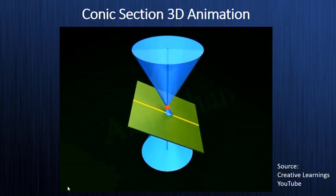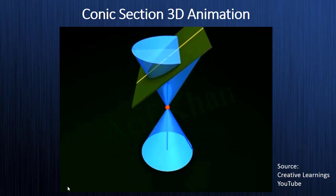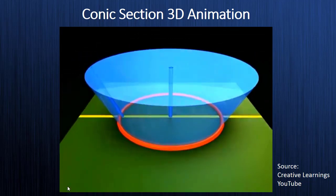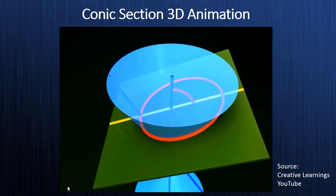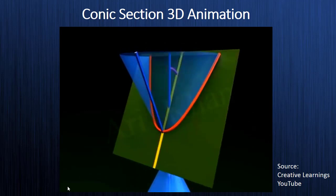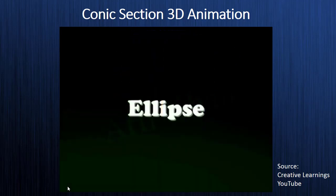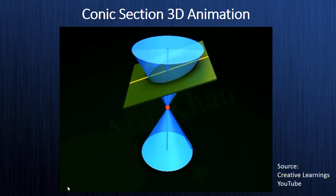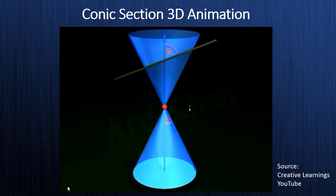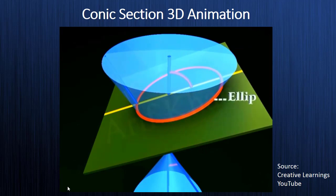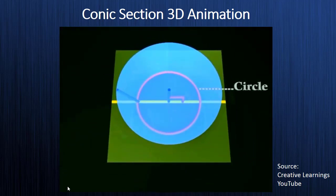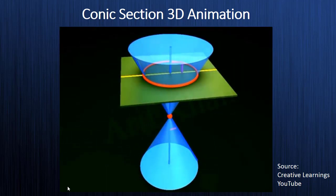If a plane intersects a double right circular cone, we get two-dimensional curves of different types called conic sections. Depending on the angle made by the plane with the vertical axis of the cone, the plane can cut the cone in three different ways. When the plane intersects the cone such that the angle between the plane and the axis is greater than the vertex angle, we get a closed curve called an ellipse. When the plane is perpendicular to the axis, the ellipse becomes a circle — thus a circle is a special type of ellipse.